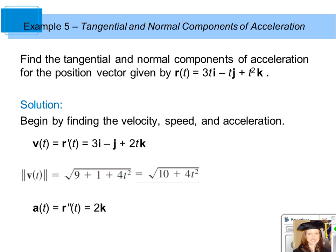Our acceleration vector valued function is the second derivative of your position vector valued function, r double prime of t, which is equal to 2k.